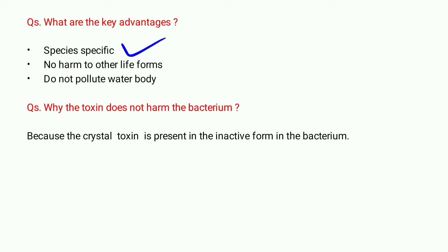Another advantage is that it does not harm any other life forms. If we use BT toxin to kill a bollworm or any larva destroying our cotton or brinjal crop, consuming that brinjal will not give any adverse side effects on human beings. Thirdly, it does not cause any pollution in water bodies, as it does not enter water sources.